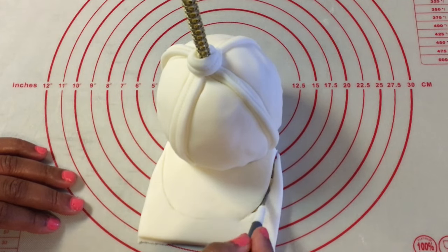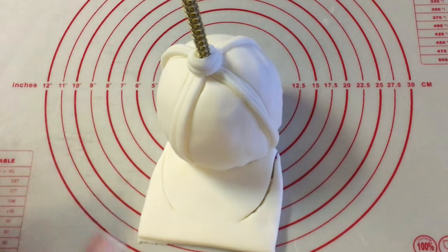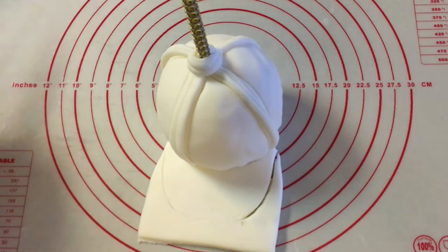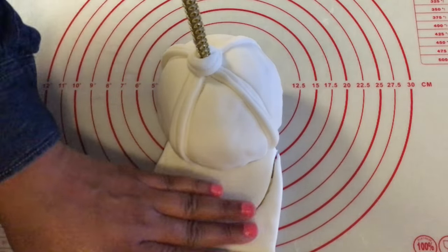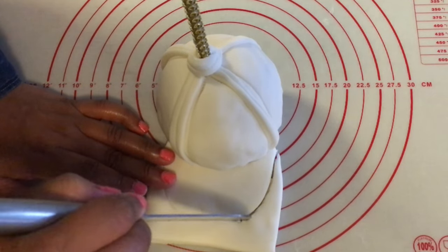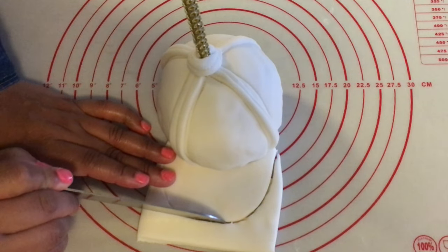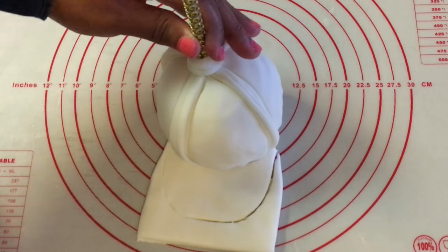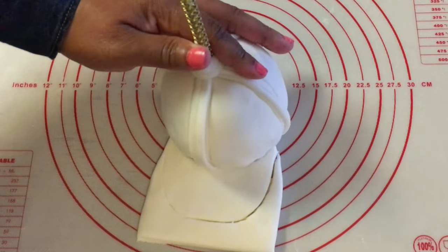So right now I am using the fondant tool to come around that corner. I can probably use a knife right there. I don't think I have that straight.